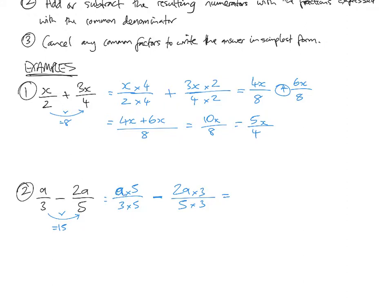a times by 5 is 5a on 3 times by 5, 15. Take away 2a times 3, which is 6a on 5 times by 3, 15. We've now expressed them in terms of 15ths.